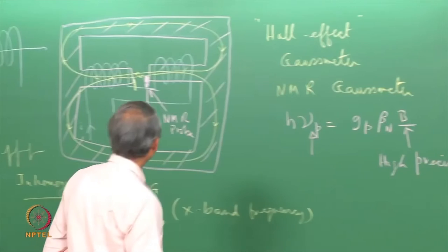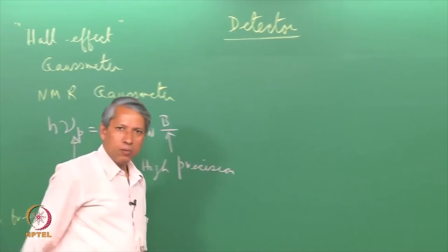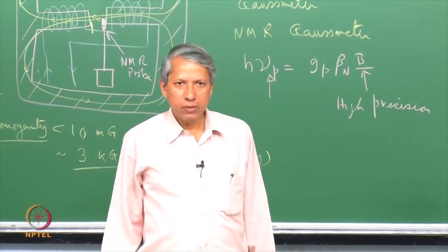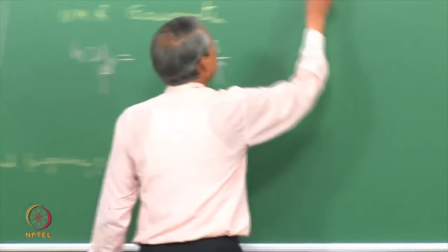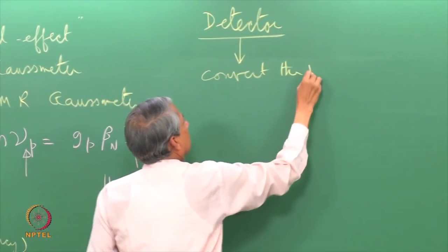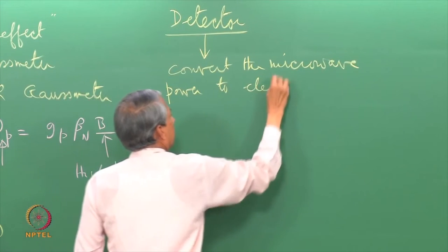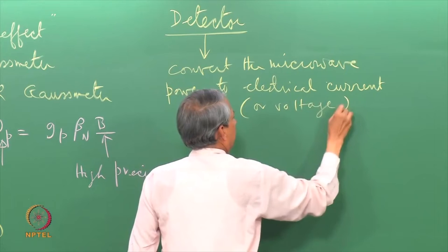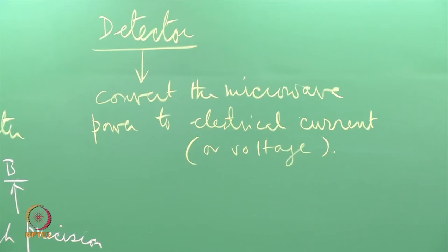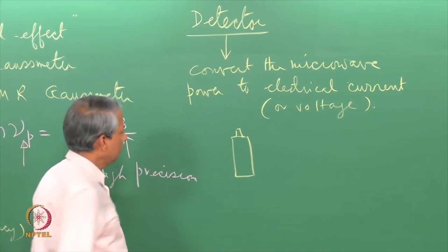The next important component of the spectrometer is of course the detector. The detector's job is to measure the microwave power that is coming out of the cavity and which will carry the information about the absorption of microwave by the sample. What it does is to convert the microwave power to electrical current or voltages so that it can be further amplified and recorded. The detector that is used in EPR spectroscopy is usually a silicon diode. The diode is kept inside.